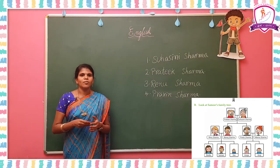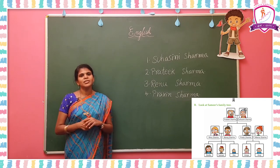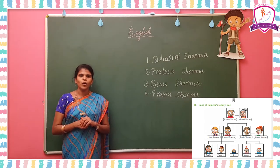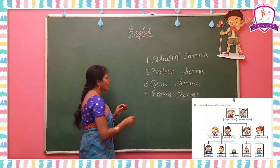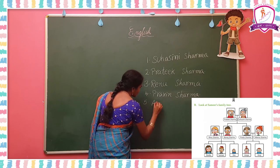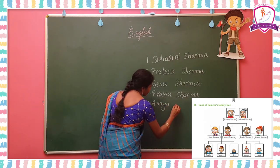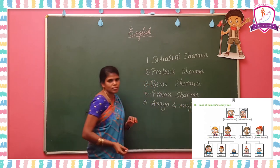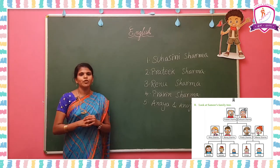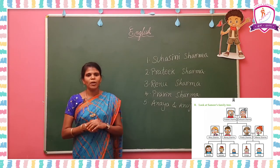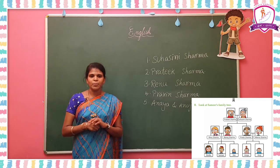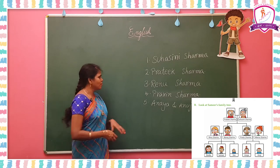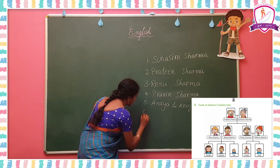Question number 5: What are the names of Samir's cousins? Samir's cousins are the children of his uncle and aunt. Samir's cousins are Anya and Anju. Question number 6: What is the name of Samir's younger brother? Younger brother means your small brother. Dev is the answer.